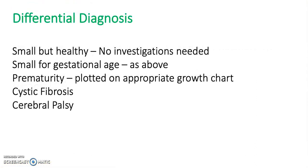Differential diagnosis: the baby may just be small but healthy, in which case no investigations are needed. Other differentials include small for gestational age — as above — prematurity, which should be plotted on an appropriate growth chart, and cystic fibrosis or cerebral palsy.